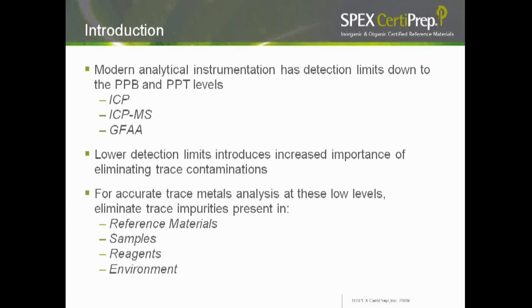Technology in the manufacture of instruments has evolved leaps and bounds in the past few decades. Detection limits have decreased tremendously. Instruments with these new innovative technologies can detect trace impurities in PPB — that is microgram per liter — or PPT, that is nanogram per liter, or even at parts per quadrillion, that is picogram per liter. Such instruments are of no use if we do not identify, minimize, or eliminate totally such impurities.